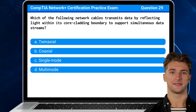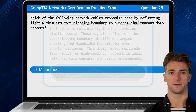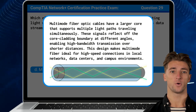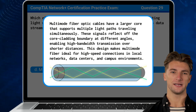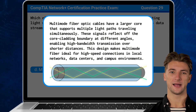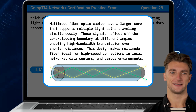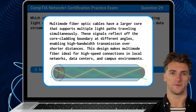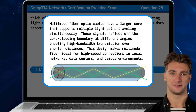The answer is D: multimode. Multimode fiber optic cables have a larger core that supports multiple light paths traveling simultaneously. These signals reflect off the core cladding boundary at different angles, enabling high-bandwidth transmission over shorter distances. This design makes multimode fiber ideal for high-speed connections in local networks, data centers, and campus environments.